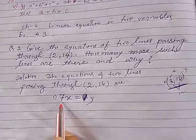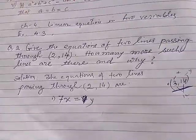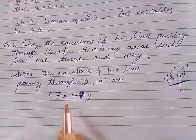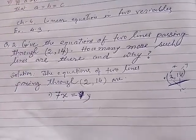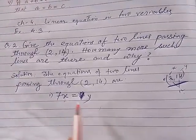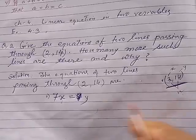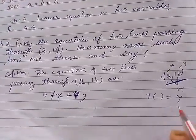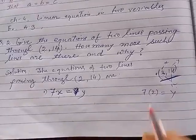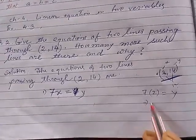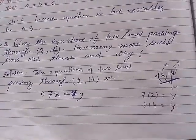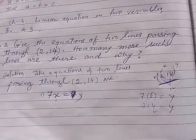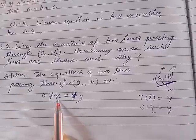Now just look here: seven times x equals y. If the x value is 2, will you get the y value 14? Yes — 7 times 2 is 14. So if 7x equals y and x is 2, then y is 14. So this is a linear equation which is satisfied by the point (2, 14).